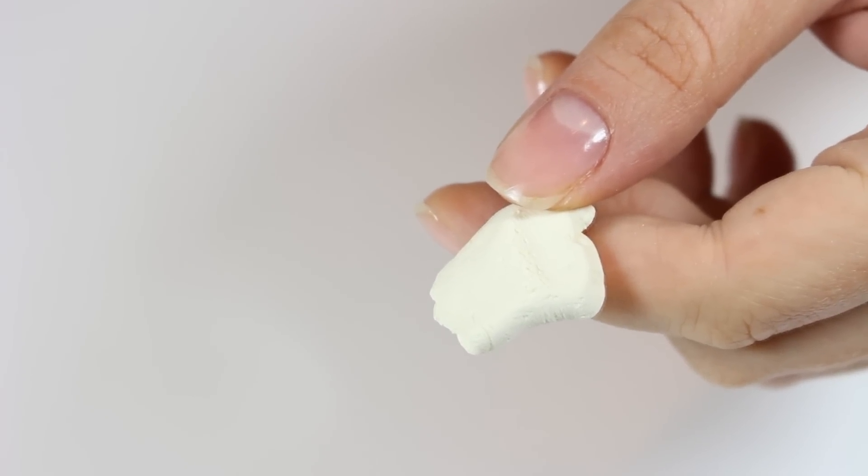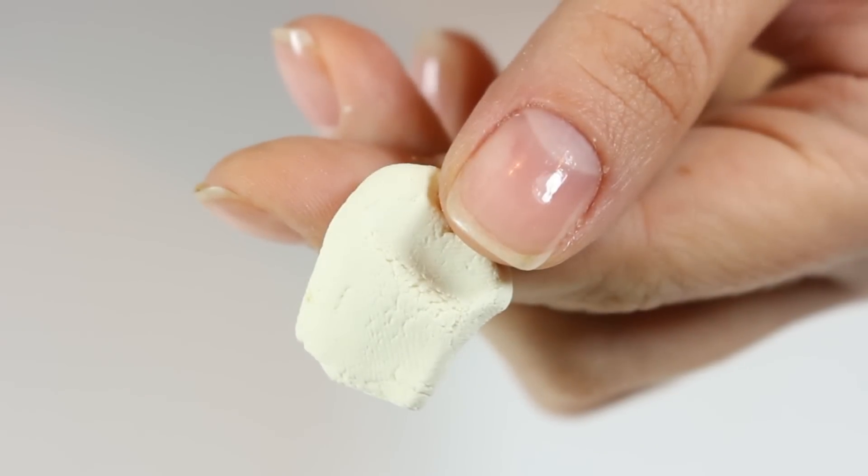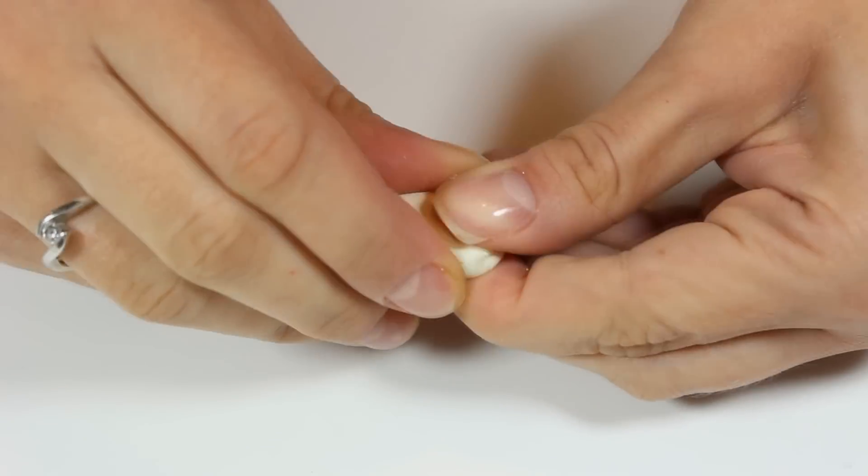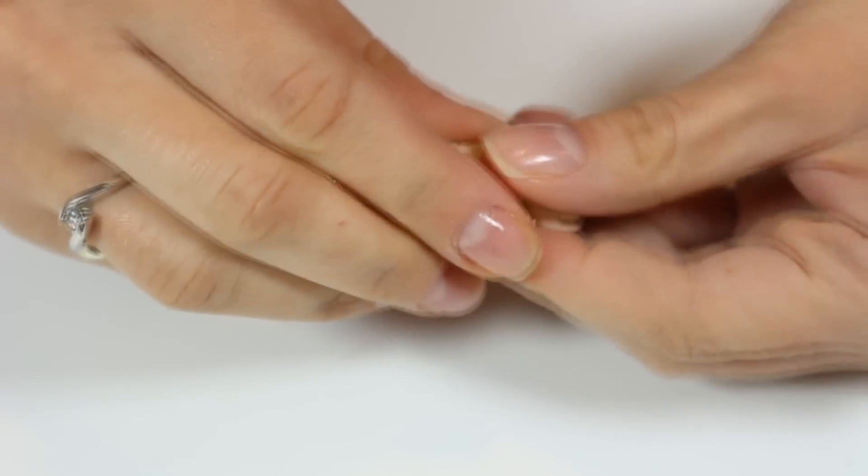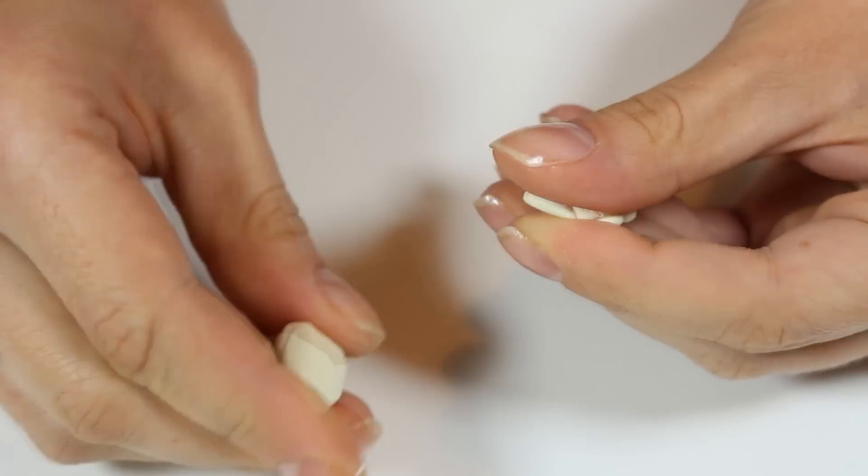To start off I'm going to grab this piece of clay that I've made by mixing white with a tiny bit of yellow. We're going to use that to create a cob. I'm taking a piece and rolling it to get a nice cylinder.